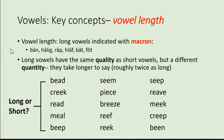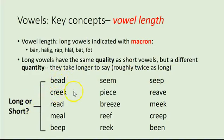In Old English, vowel length is phonemic — a word might be different based on whether its vowel is long or short. For example: 'bān,' 'hālig,' 'rāp,' 'hlāf' (a loaf of bread), 'bēat' (ordered or commanded), 'fōt' (foot) — these are all long vowels. Long vowels have the same quality as short vowels but a different quantity; they take longer to say, roughly twice as long.